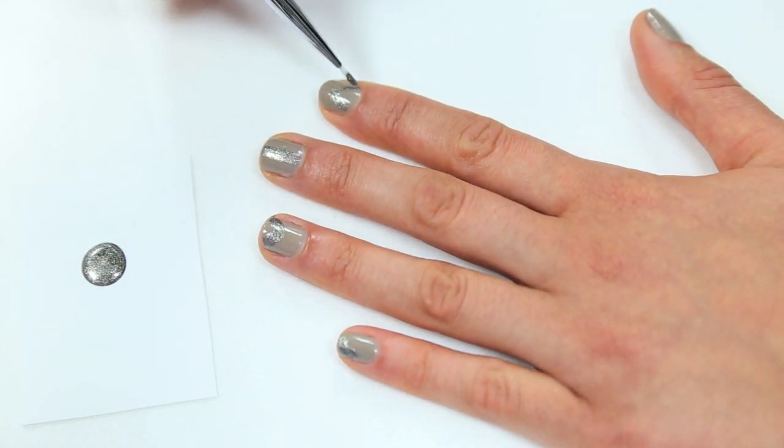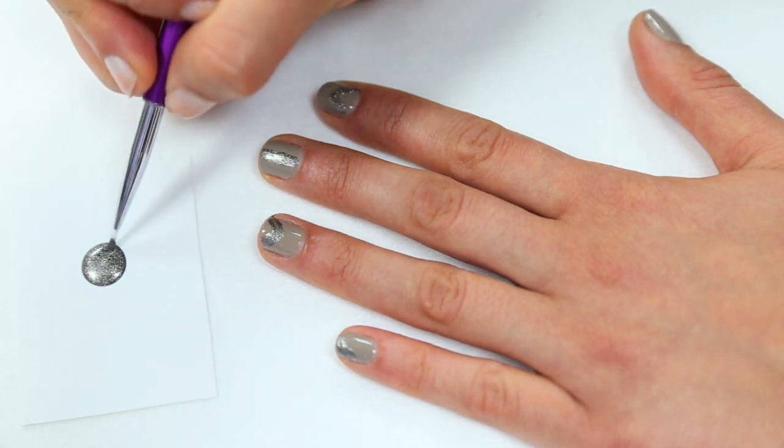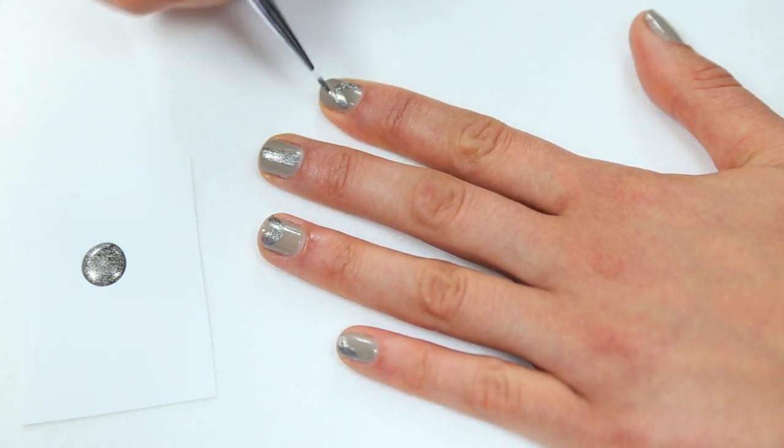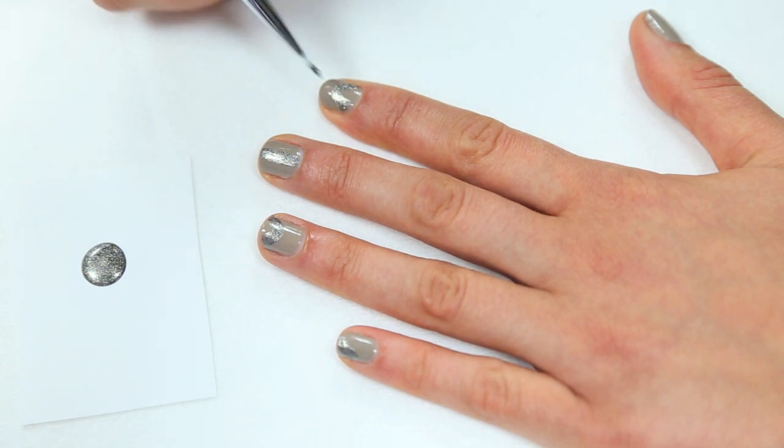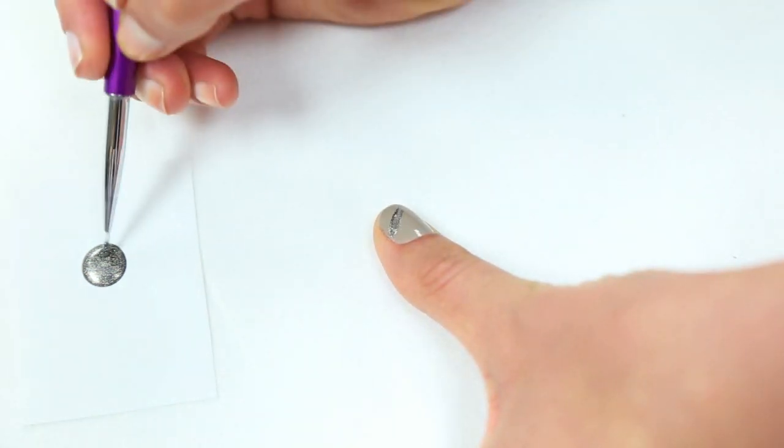Do another triangle, this time coming from the base of your nail on the pointer finger. And on the thumb, another asymmetrical swipe across the tip of your nail.